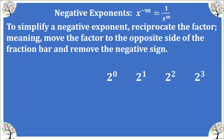Here is the negative exponent rule — write this in your notes. When you have a base raised to a negative exponent, we do not want any negative exponents, so we move that factor to the denominator and make the exponent positive. If nothing remains in the numerator, we place a 1 there. To simplify a negative exponent, reciprocate the factor — move it to the opposite side of the fraction bar. These two expressions are equivalent.